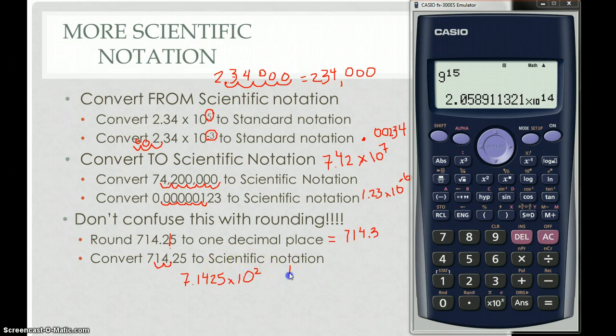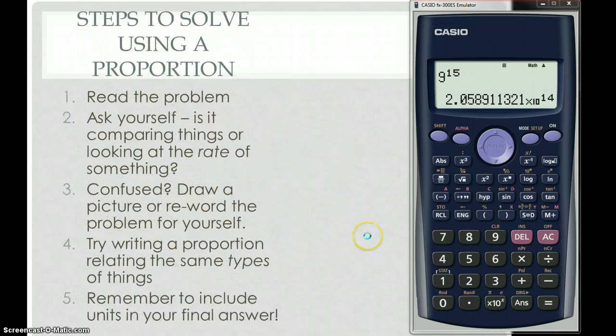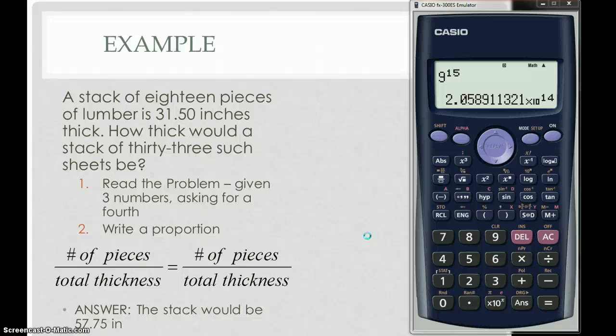Scientific notation, you move the decimal point. Rounding, you cut off and keep that decimal point. Last we have solving word problems. A proportion is when you have a fraction equal to a fraction. Here is a good example of a proportion problem. You don't have to solve them this way, but it's pretty quick to set up.